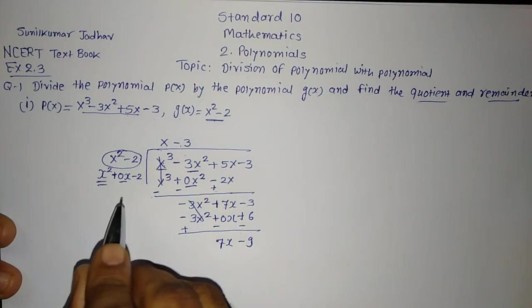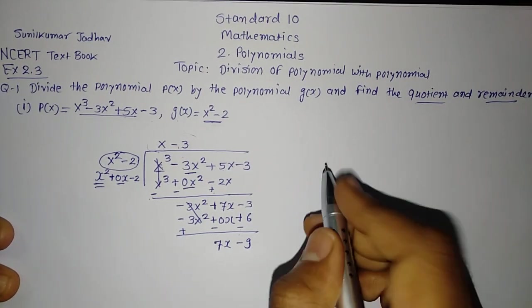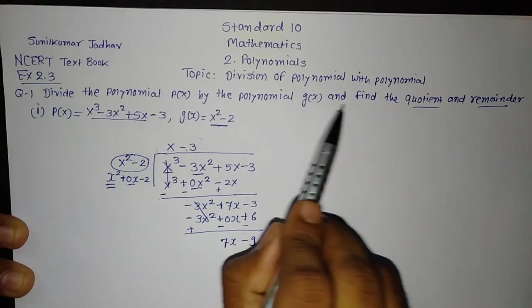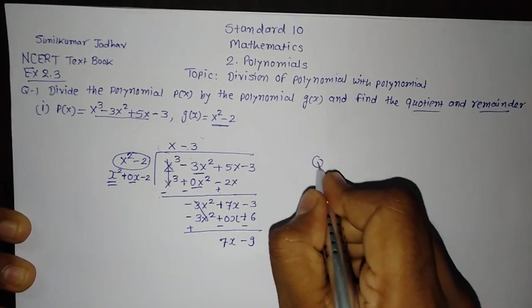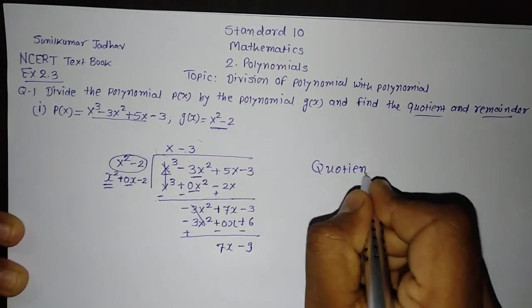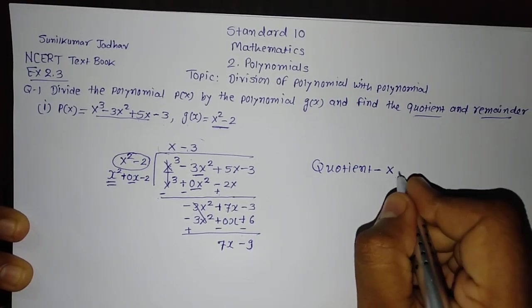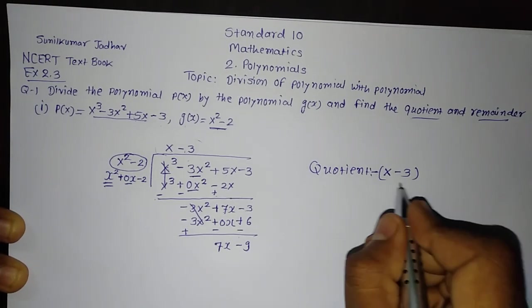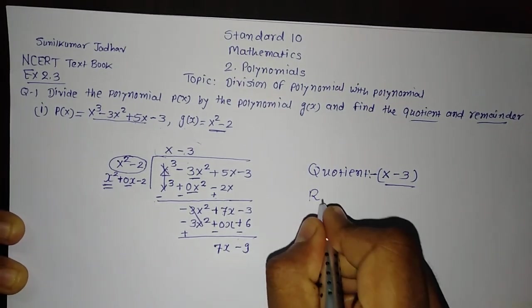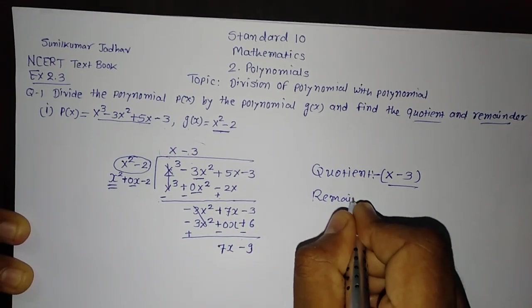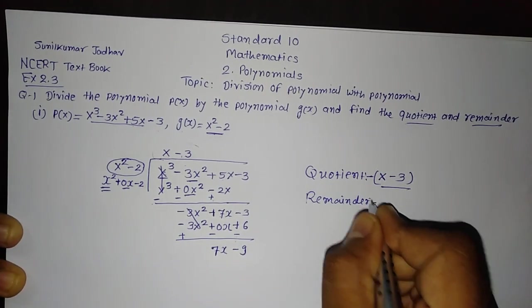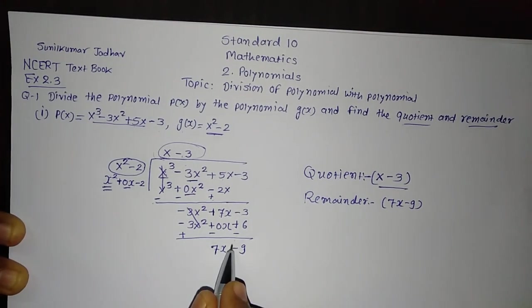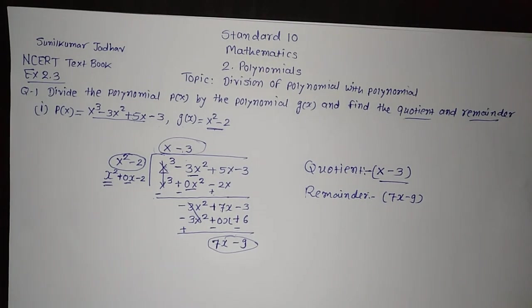So here, what we got, this is our quotient. We will write it here as we have been asked, divide the polynomial P(x) by polynomial G(x) and find the quotient and remainder. So quotient of the polynomial, when we divide polynomial by polynomial, the quotient will remain x minus 3 and remainder will be equal to 7x minus 9. So this is our quotient and this is our remainder. I hope you easily understand it.